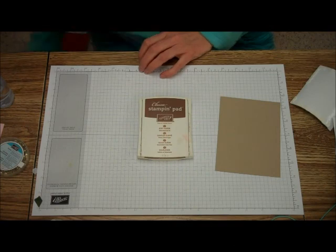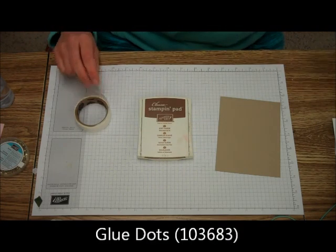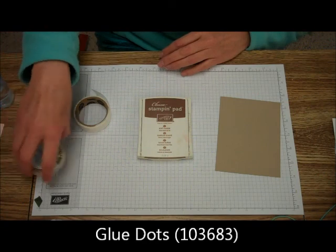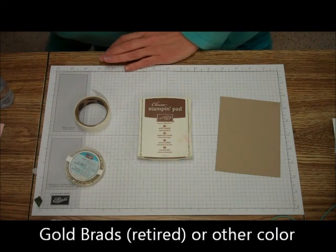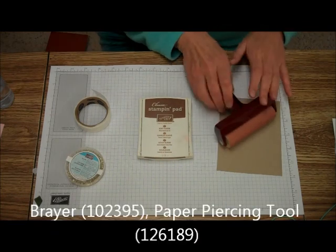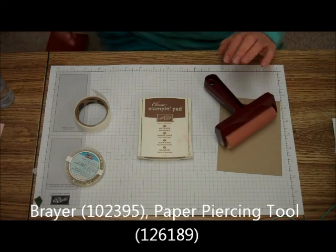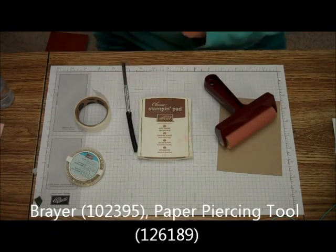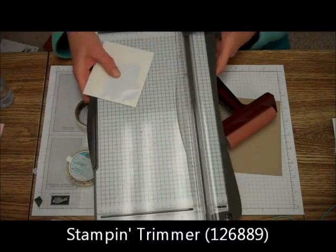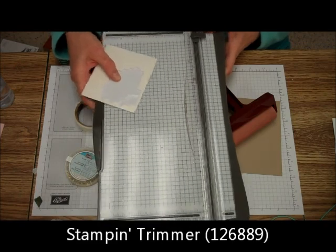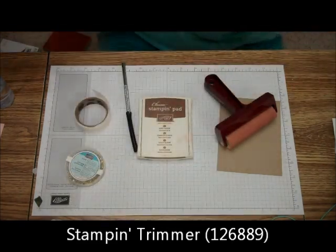You're going to need glue dots, some brads, and I'm using the retired gold brads. I'm also going to be using the brayer, the paper piercing tool, and the stamping trimmer.